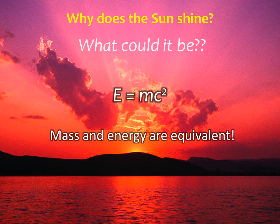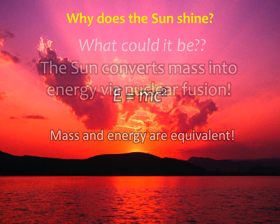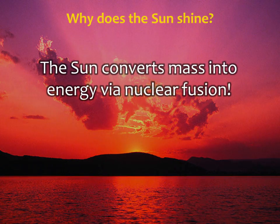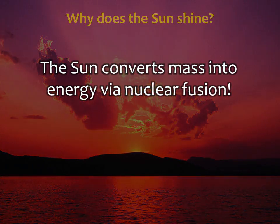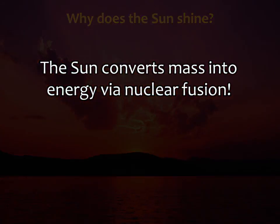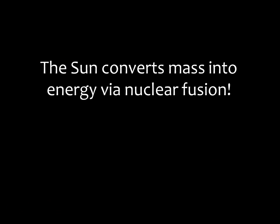Calculations immediately showed that the sun's mass contained more than enough energy to account for billions of years of sunshine. By the end of the 1930s, it was clear: the sun converts mass into energy through the process of nuclear fusion.